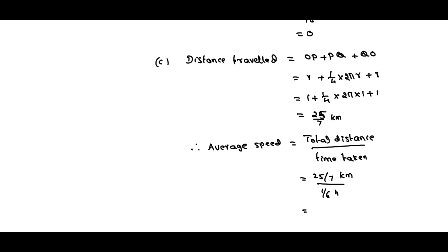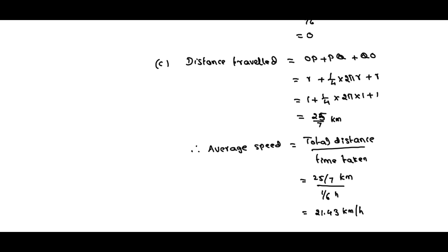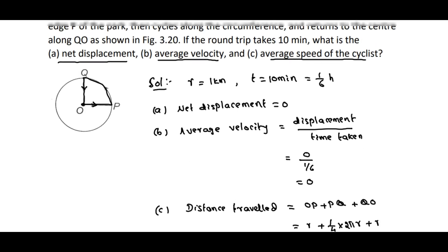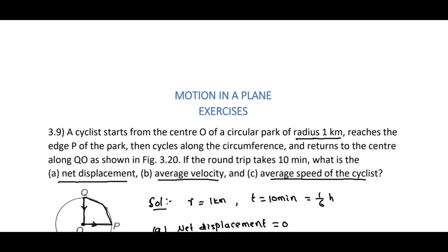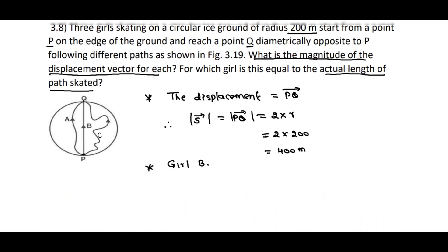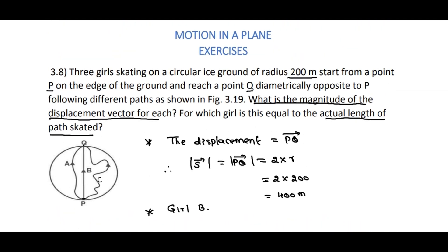So after the simplification, we will get 21.43 kilometers per hour. So this is the average speed. These are the solutions of 3.8 and 3.9. Thank you.